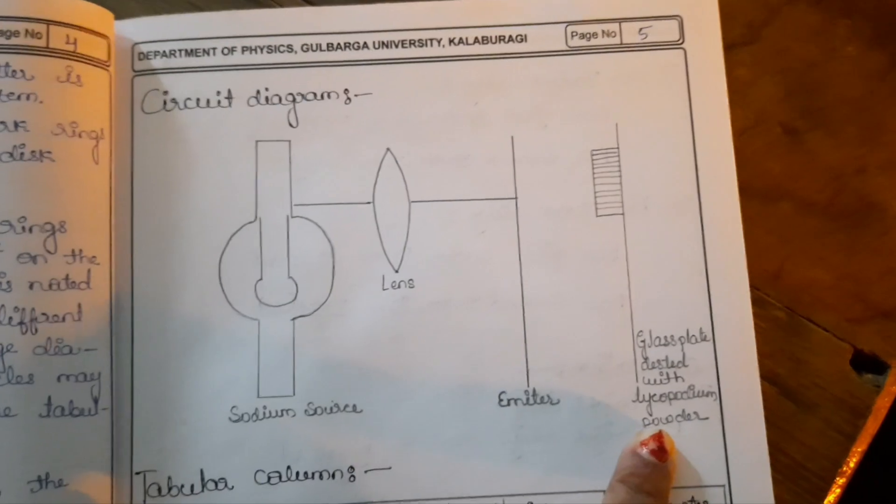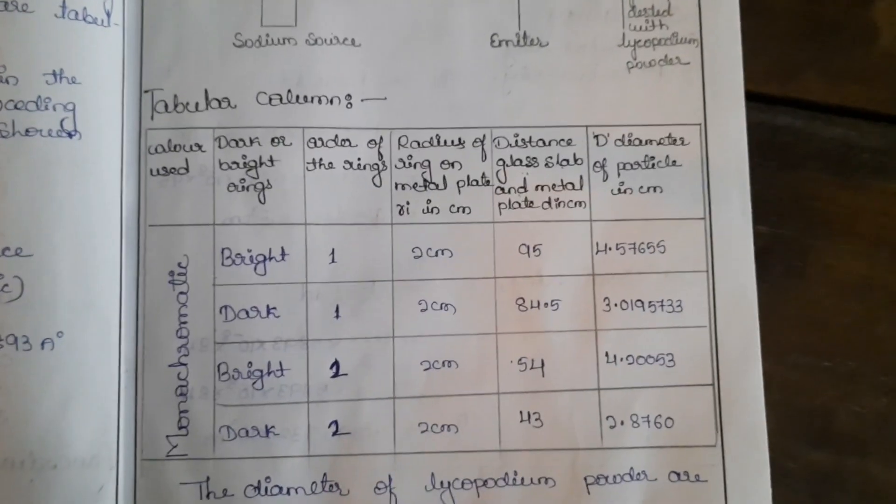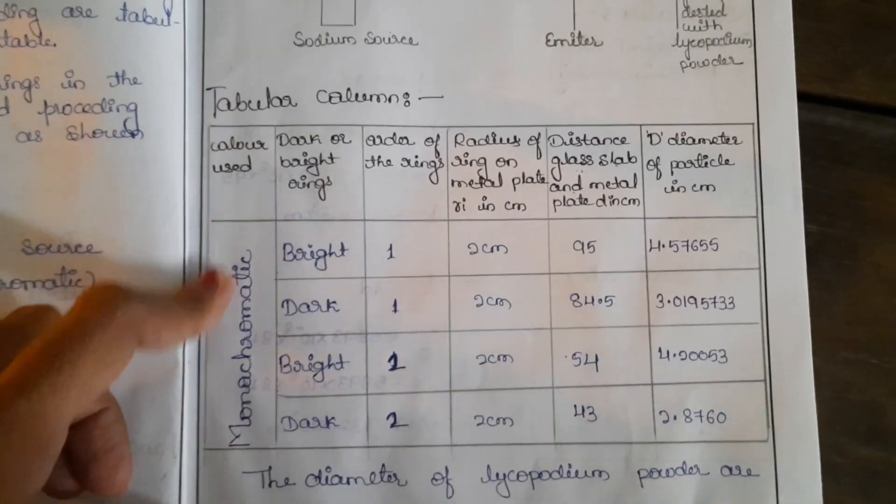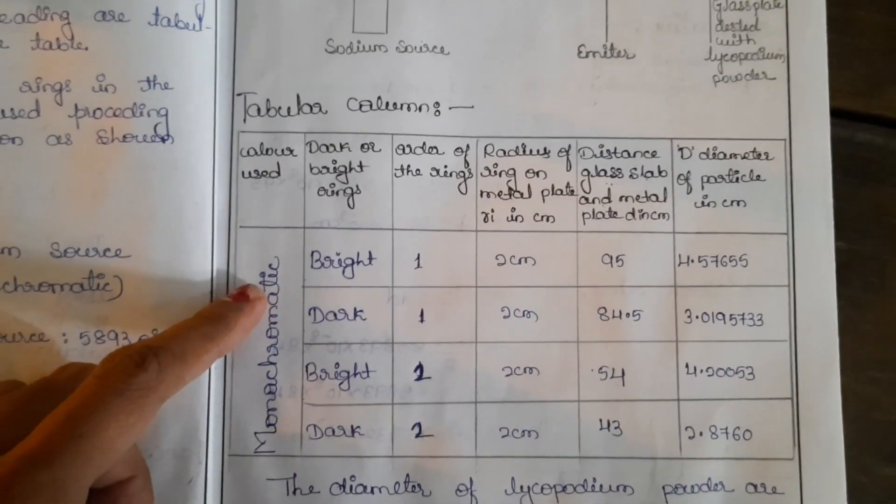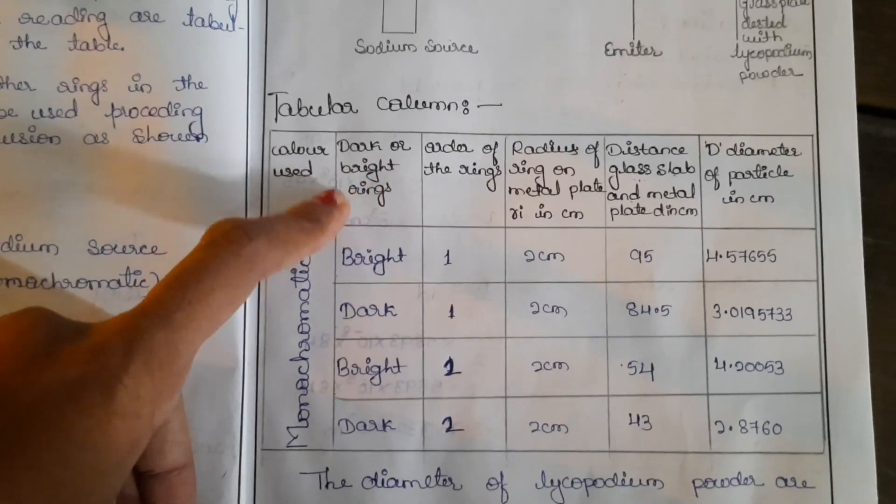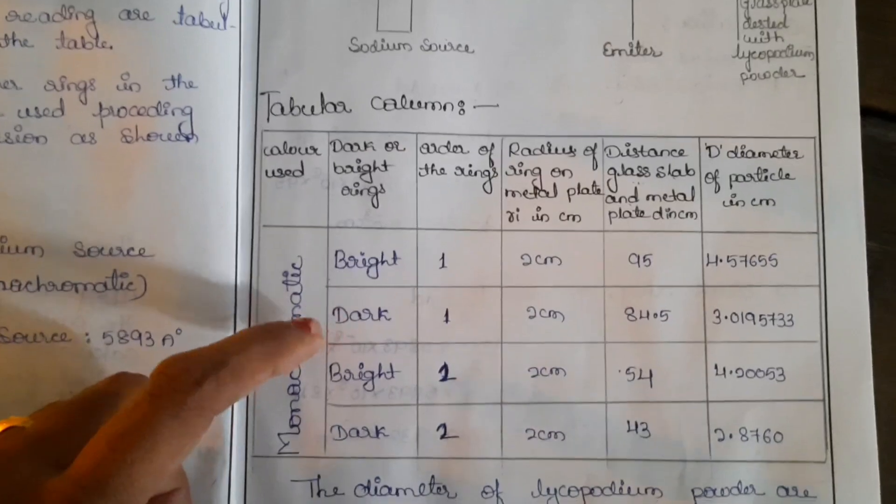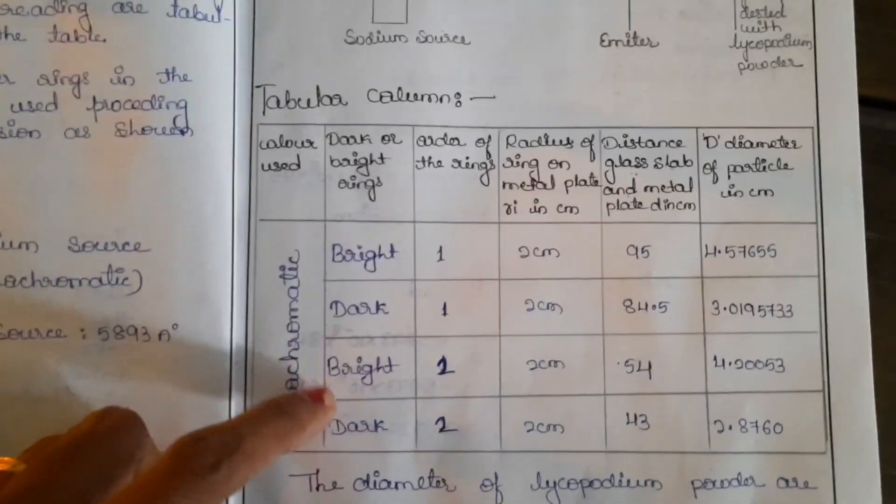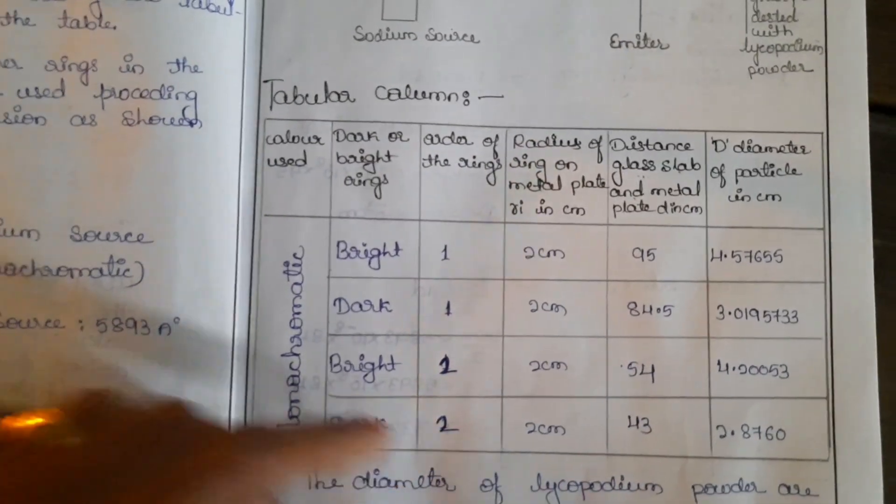Like that we have made the arrangement: sodium source, lens, emitter or array disc, then glass plate dusted with lycopodium powder. You can see here the tabular column: color used monochromatic sodium source yellow color, dark or bright ring, first bright, second bright, second dark, order of the rings you have to write.